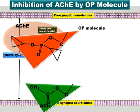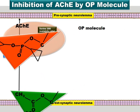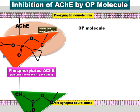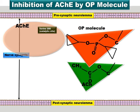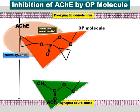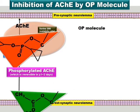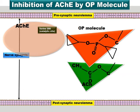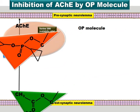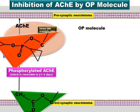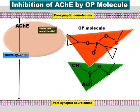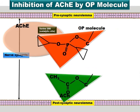Similarly, the competition of an organophosphate (OP) insecticide molecule with acetylcholine for the catalytic site of acetylcholinesterase and its binding to that site is known as phosphorylation of acetylcholinesterase. This inhibits the function of acetylcholinesterase for at least 24 hours, after which the OP molecule leaves the catalytic site — also known as reversal.